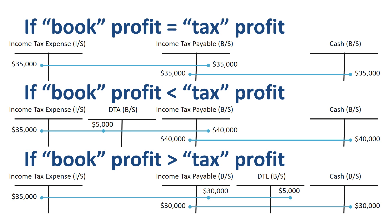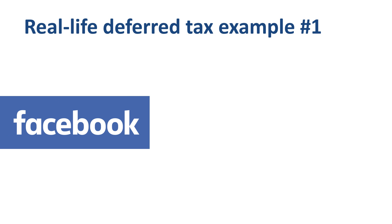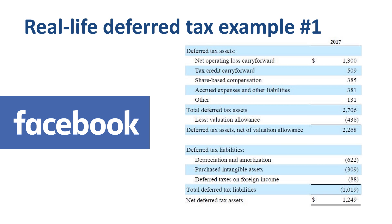Now that you understand the concept of deferred taxes and the journal entries for both deferred tax assets and deferred tax liabilities, let's review some real-life examples of three well-known companies to make it come alive. First up, Facebook. Facebook had net deferred tax assets of 1.2 billion dollars at the end of 2017. The main driver on the side of deferred tax assets is a net operating loss carry forward, which represents the right to offset future profits against losses from the past. The main driver of deferred tax liabilities is depreciation and amortization.